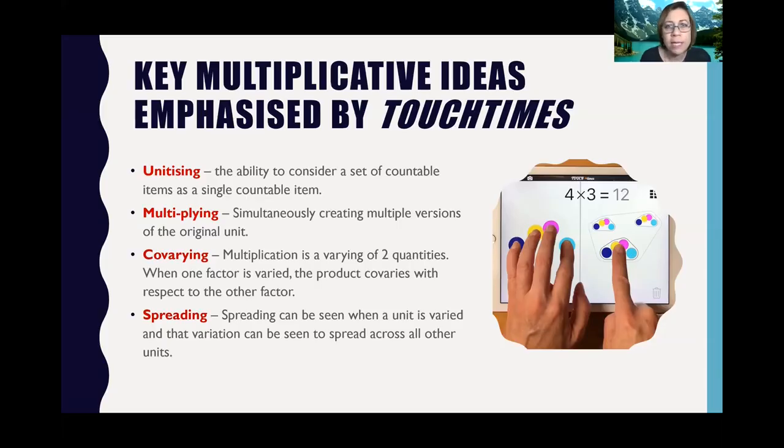Here is a summary of the key multiplicative ideas that are emphasized by touch times. The first is unitizing, which is the ability to consider a set of countable items as a single countable item. And this occurs when one hand makes a set of pips. Multiplying, which is simultaneously creating multiple versions of the original unit, happens when the other hand makes a set of pods either all at once or each time additional pods are iterated.